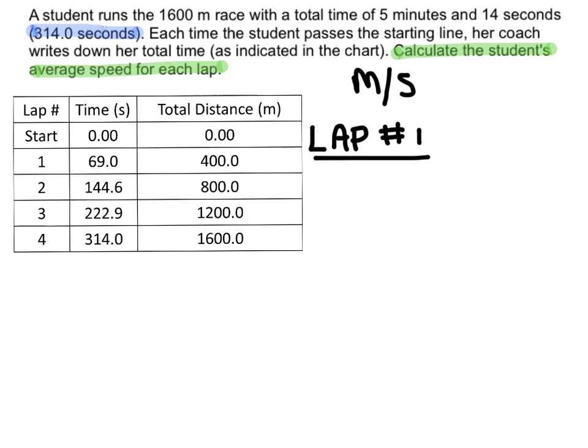And the equation for speed is going to be V equals distance over time. And we could put that little line above there to say that it's an average speed. So the total distance traveled in this first lap was 400 meters, starting at 0 and moving to 400. So we could say the final distance minus the initial distance, in this case it's going to be 400 minus 0. So it's really going to be 400 meters.